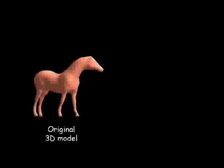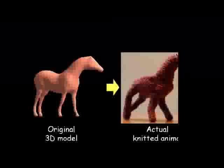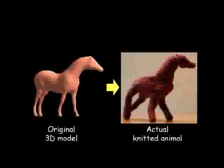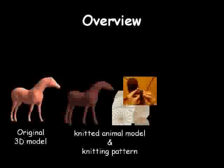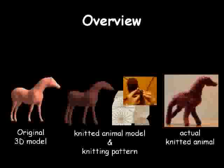We introduce a system to create a knitted animal model from a given 3D surface model. A knitted animal is made of a cross-knitted yarn surface that is stuffed with cotton. This is an overview of our system. The system takes a 3D surface model as input and produces a knitting pattern for knitting a real knitted animal.